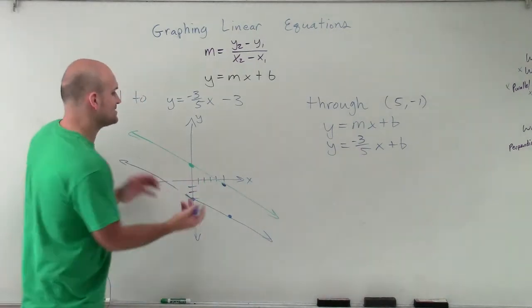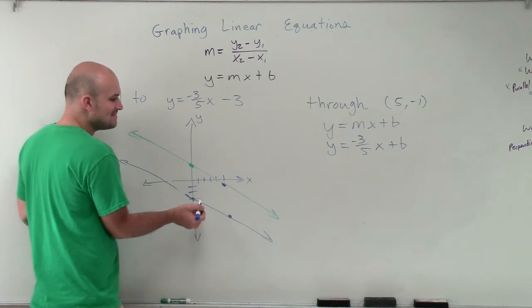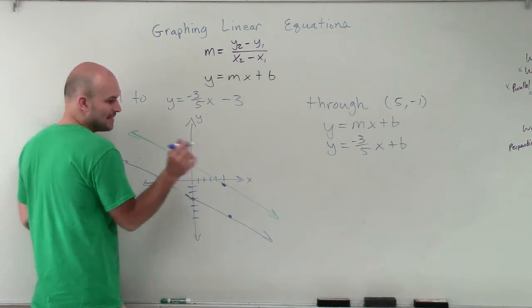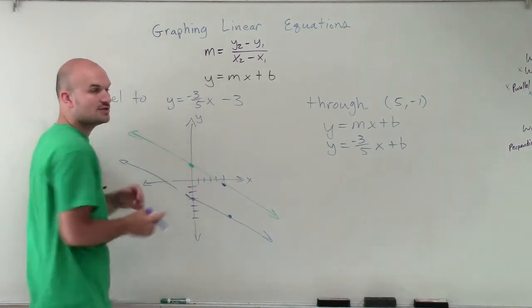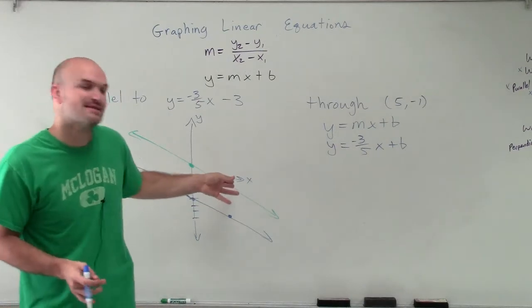The only thing I know about this line is that it has the exact same slope, a different y-intercept, and it goes through this point. So let's talk more about what does that point tell us.